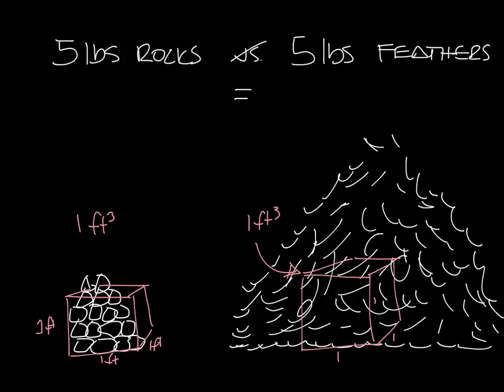So now we have our cubic foot of rocks and a cubic foot of feathers, but you can clearly tell they have different weights. Let's say a cubic foot of rock weighs five pounds and a cubic foot of feathers weigh a half pound. So now we're talking about the density.